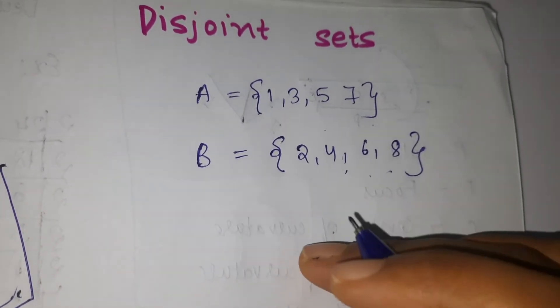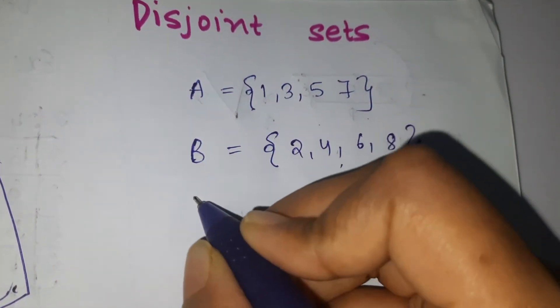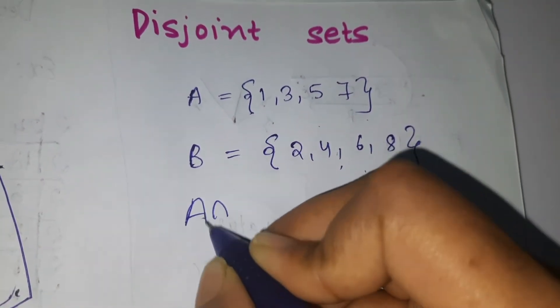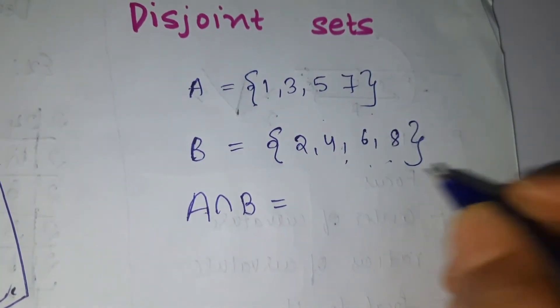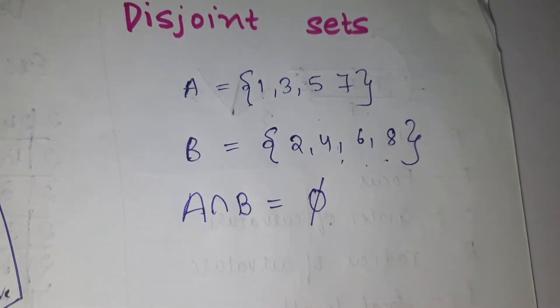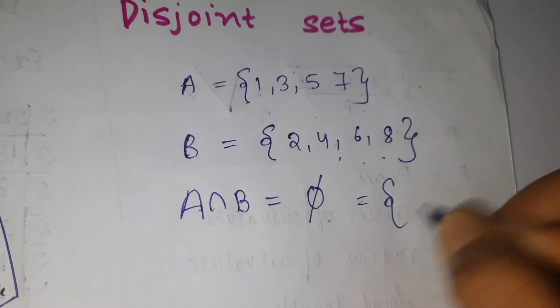So if you are writing A intersection B, what will we get? Is there anything common in this? No, so A intersection B is basically phi or the empty set.